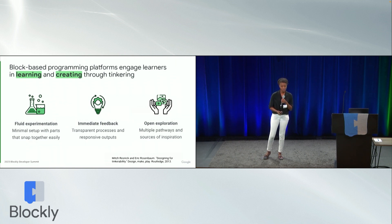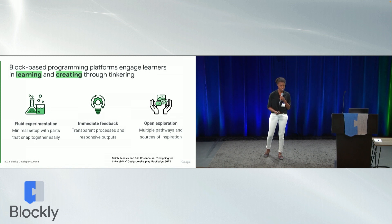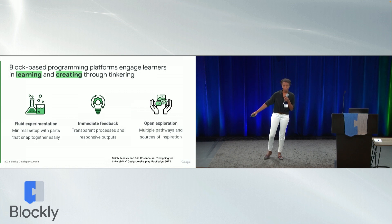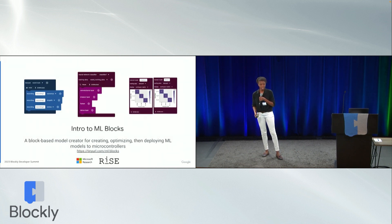The three design principles from Mitch and Scratch and Eric Rosenbaum are: one, fluid experimentation — low floor, high ceiling, make it super easy to get started and allow users to go as far as they can with it; two, immediate feedback — the interface needs to be very responsive to the changes users make so they can figure out what it's doing; and three, open exploration — very wide walls in the pathways for expression and engagement you're offering, and sources of inspiration so users can see what they can do with it.